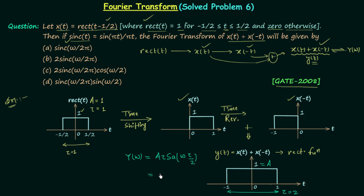The Fourier transform of a rectangular function is Y(ω) = A·τ·Sa(ω·τ/2). Substituting A = 1 and τ = 2, we get Y(ω) = 1 × 2 × Sa(ω × 2/2) = 2·Sa(ω). However, 2·Sa(ω) does not match any of the four given options, so we need to perform further modifications.